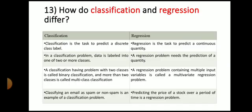Next question: how do classification and regression differ? What is the difference between classification and regression? Here you can see on left-hand side, classification; right-hand side, regression. The first difference: classification is the task to predict a discrete class label. Regression is the task to predict a continuous quantity. In classification problems, data is labeled into one or two or more classes. In regression problems, a regression problem needs the prediction of a quantity.